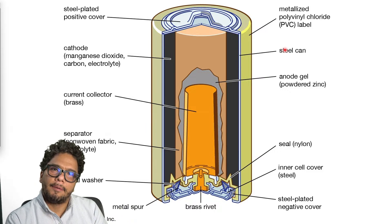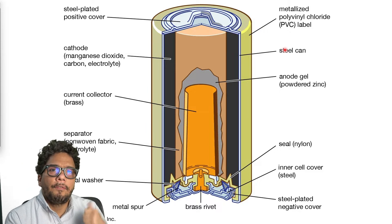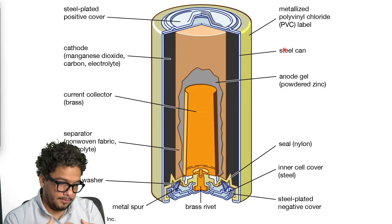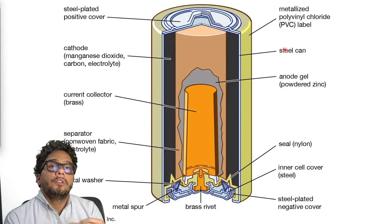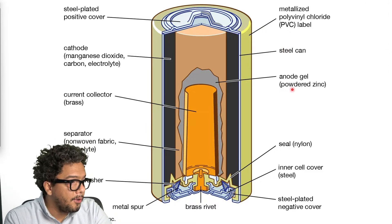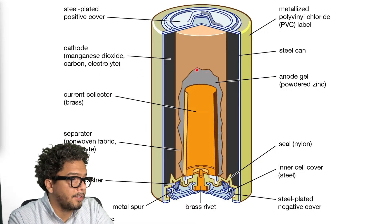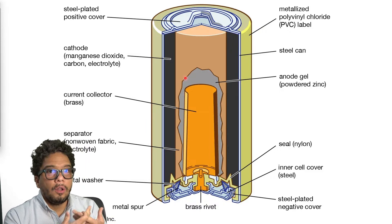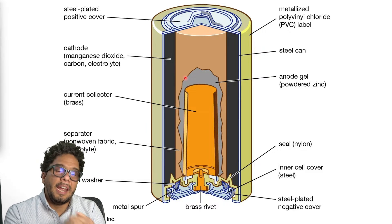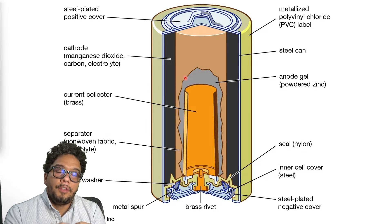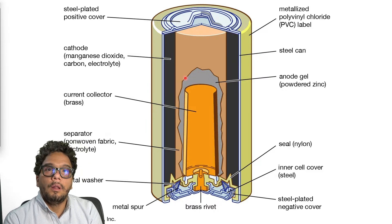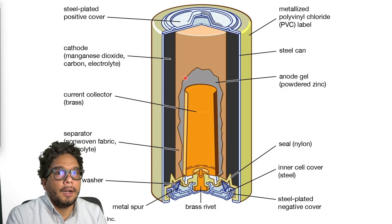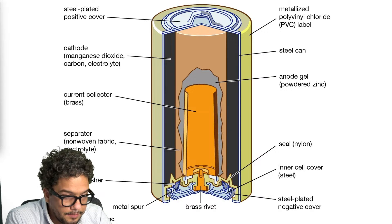Two main reasons why batteries have these kinds of shapes and are enclosed. First, they need to be enclosed to produce the chemical reaction, produce the electrons, and deliver that as power from the anode to the cathode. But also because air will contaminate the material and at the end will make it impossible to produce the electrons that are important for the battery.